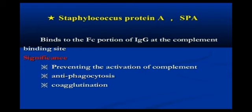Staphylococcus Protein A binds to the Fc portion of IgG at the complement binding site. Fc means fragment crystallization — the tail region of an antibody that interacts with cell surface receptors. The Fc region is present at the lower end of the IgG chain structure.